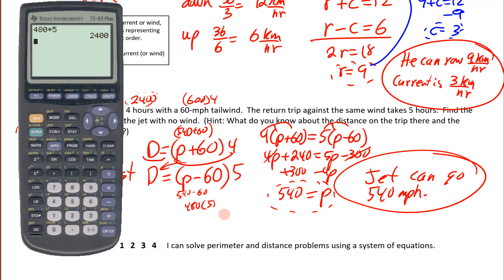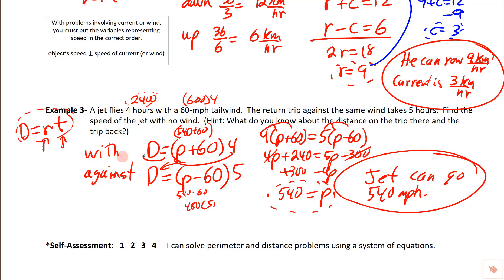Again, we're writing two equations about two different things — with the wind, against the wind, downstream, upstream, or something like how much a bead costs versus the total price. This is the last of these types of problems, but we'll be applying these principles in many different situations. Good luck, and if you need extra help, please ask for it.